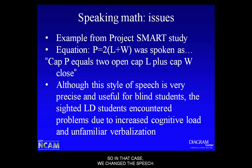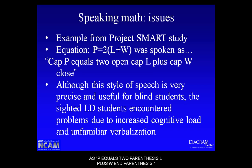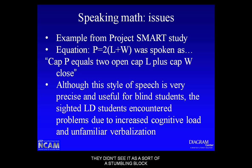So we changed the speech by creating an alternate speech rule applied in the software. Any time an equation like that came up, it would read differently — in this case: P equals 2, parenthesis, L, plus, W, parenthesis. That was much easier for students to understand and not a stumbling block. We could have also said 'P equals 2 times the quantity L plus W,' but the teachers voted that version down.